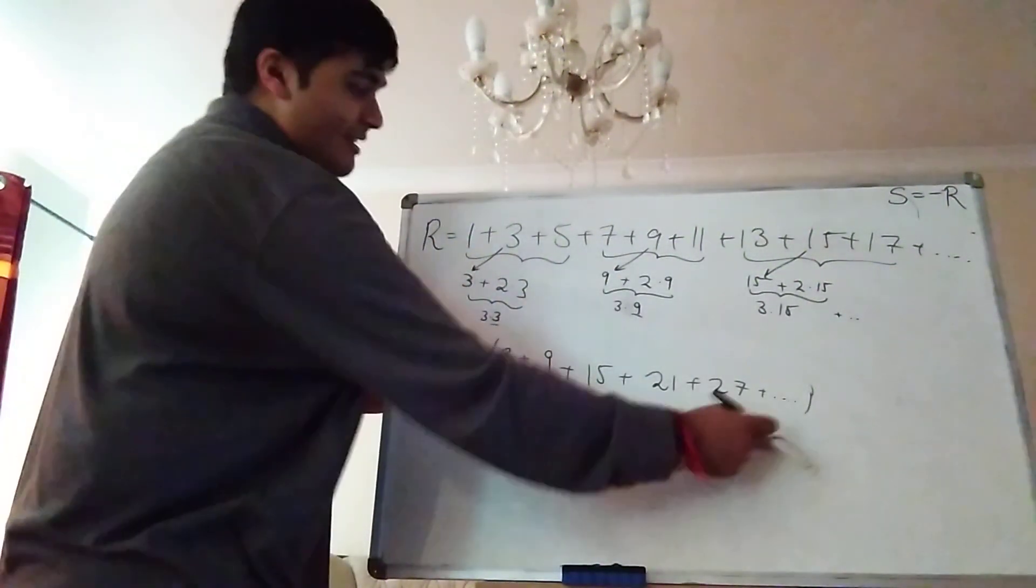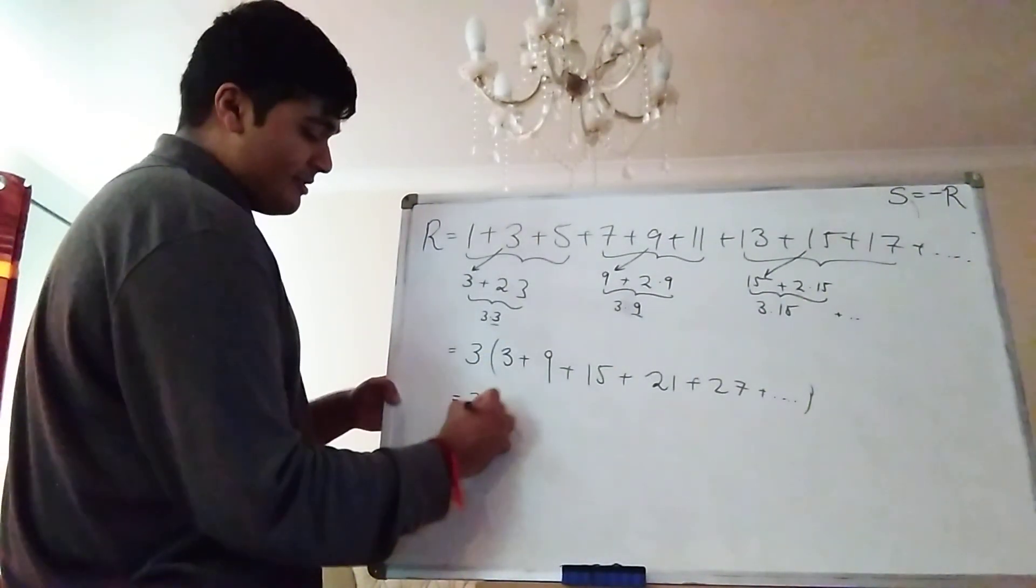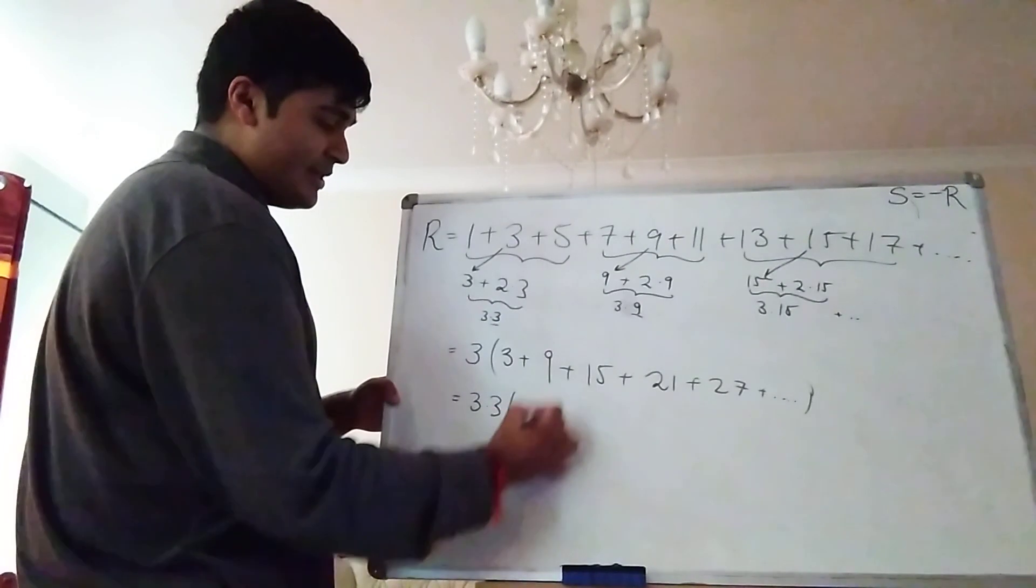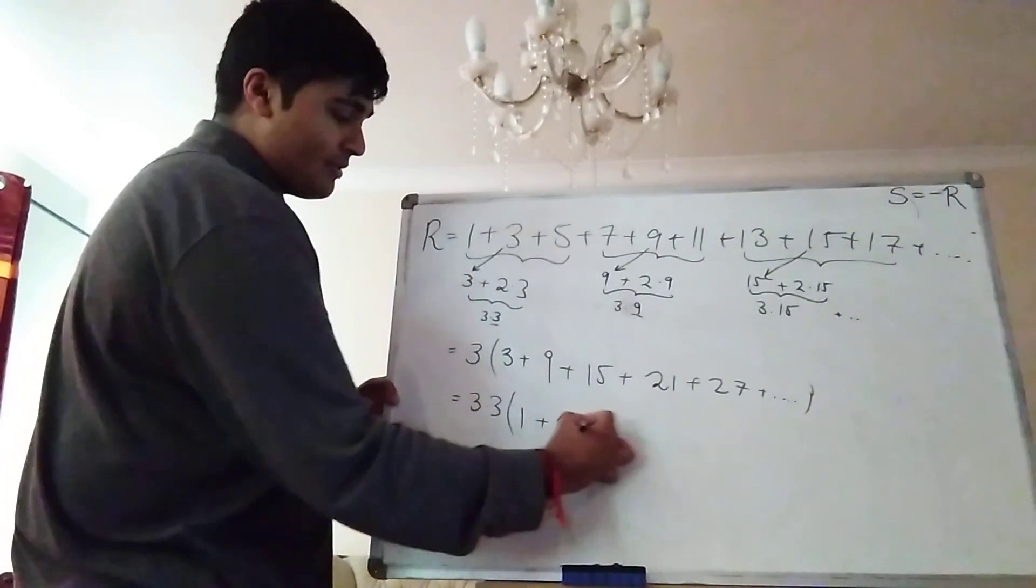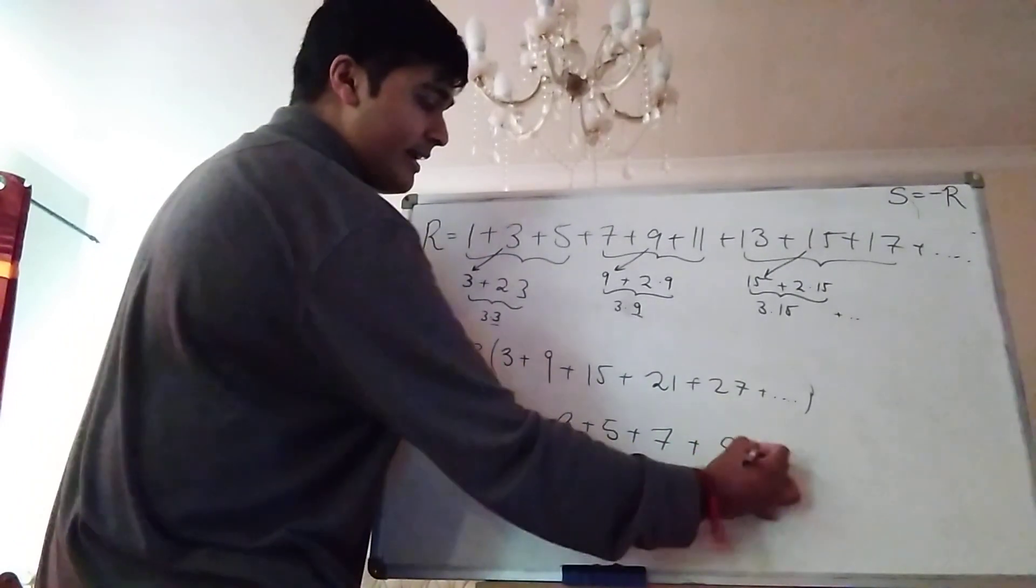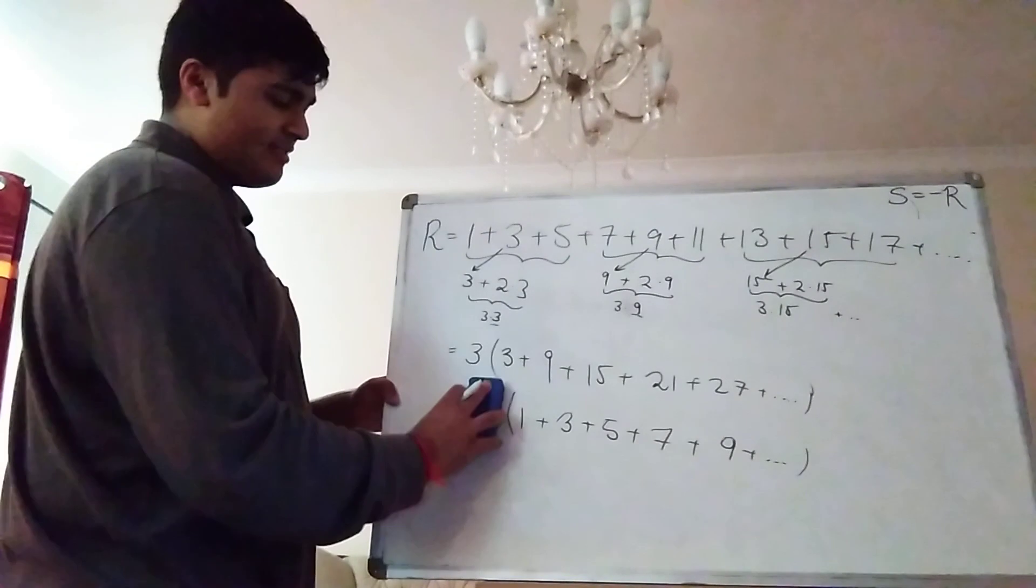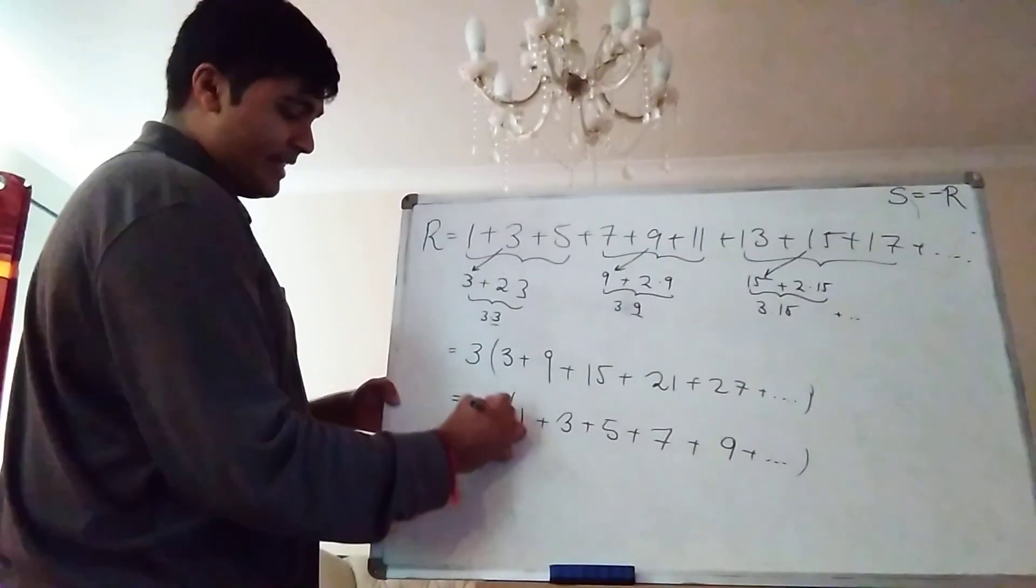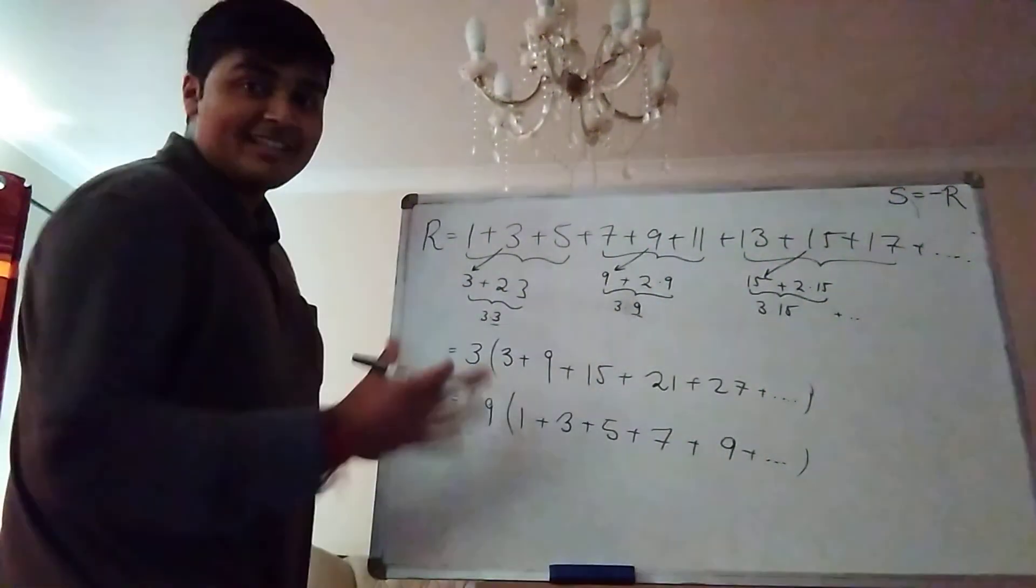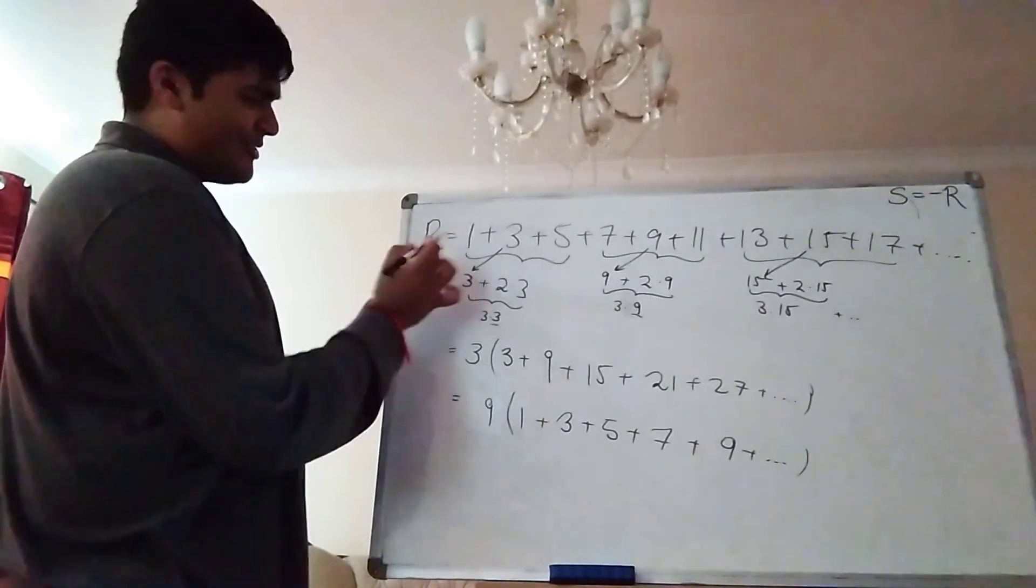Well now all of these terms here are also divisible by 3. So I can take out another factor of 3. So I get 3 times 3. Well 3 divided by 3 is 1. 9 divided by 3 is 3. 15 divided by 3 is 5. 7. 9. Well firstly I can write this 3 times 3 here as 9. But then this thing here is just the sum of the positive odd integers. But remember we define that to be R.